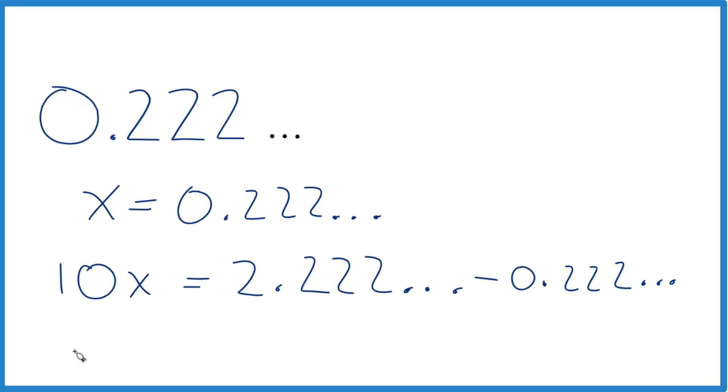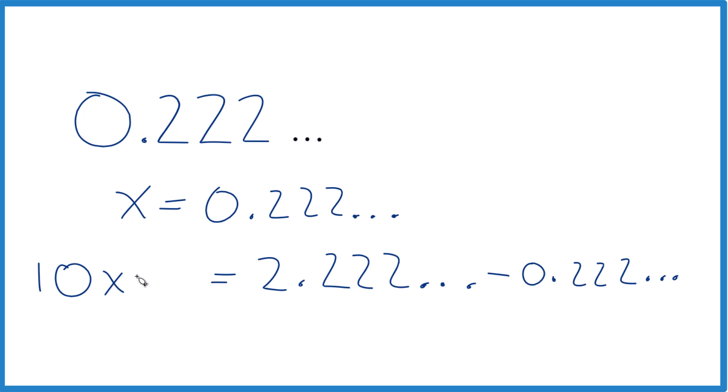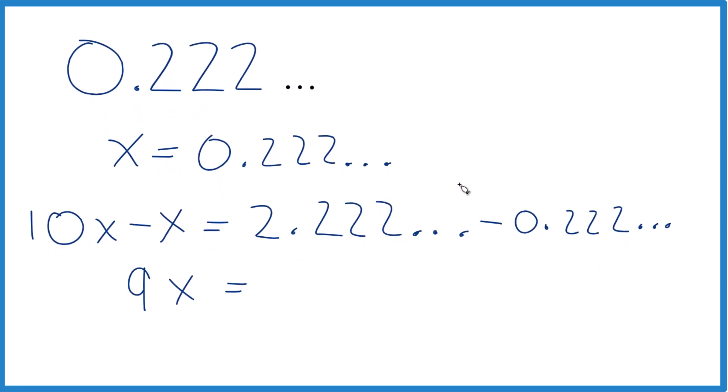So I can just say, let's move this over, 10X minus X, because remember X here is equal to this. So we did it to both sides, but now 10X minus X is 9X.